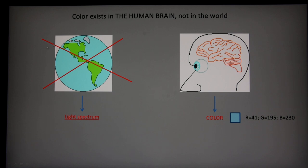Where do colors exist? Do they exist in the world? No, they exist in the human brain. In the world exists only something called a light spectrum, and in the brain exists a color which is composed of three components: red, green and blue, like this blue for example.